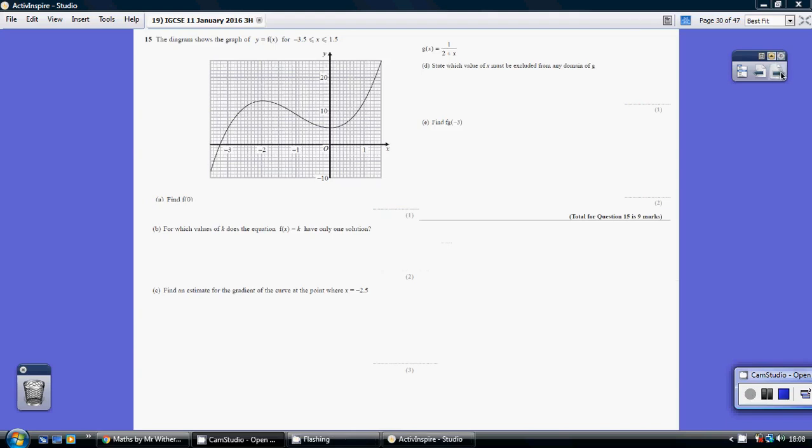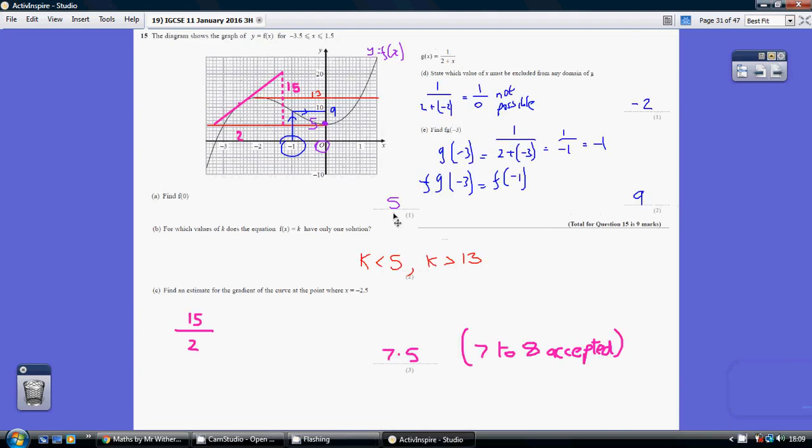Question 15. We're being asked to find f of 0. So when we have an x value of 0, what value do we actually get? Well, we get a value of 5.